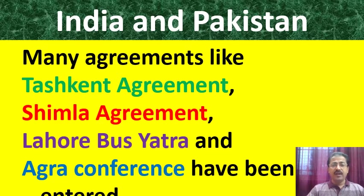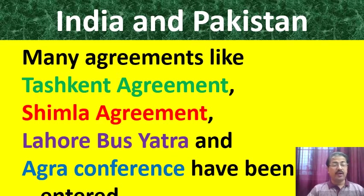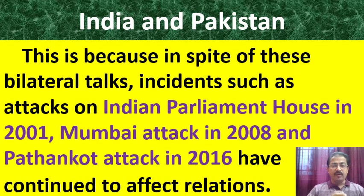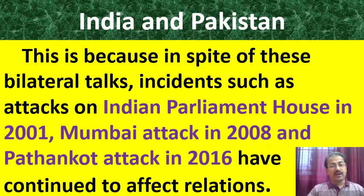To cement the relationship between India and Pakistan, India took many measures like the Tashkent Agreement, Shimla Agreement, Lahore Bus Yatra, and Agra Conference. But unless Pakistan completely stops harboring and supporting terrorism, these agreements will not be successful. Pakistan's direct involvement in the Indian Parliament attack in 2001, the Mumbai attack in 2008, and the Pathankot attack in 2016 have continued to affect our relationship.